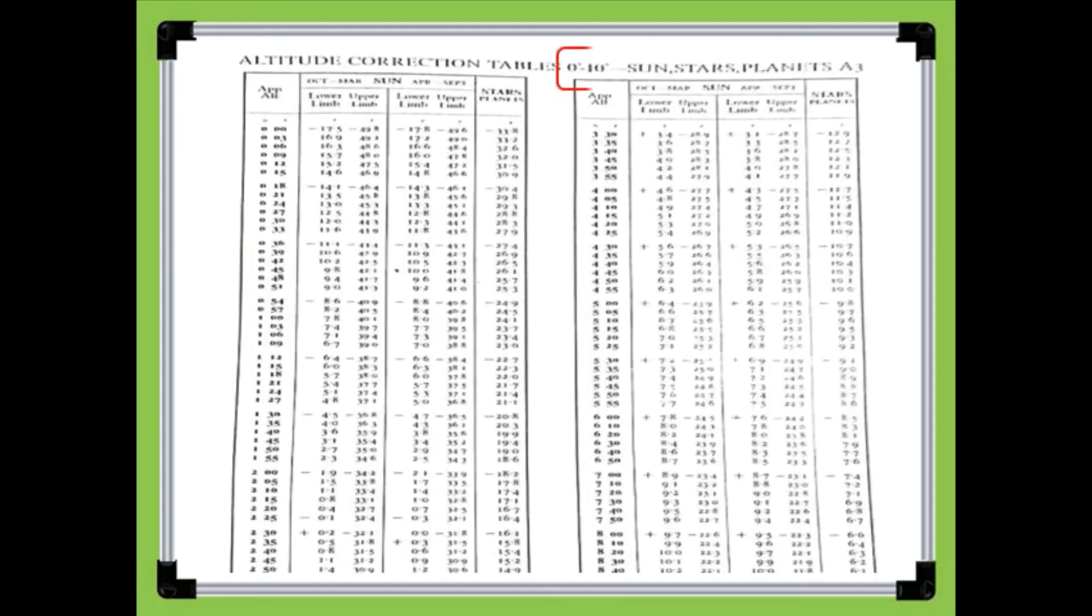Using the altitude correction table of the sun, stars and planets of the nautical almanac, locate zero degree to 10 degrees, for the reason that the altitude of the star Sirius is in between that altitude range.